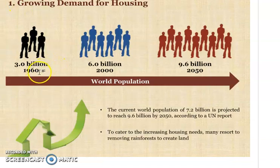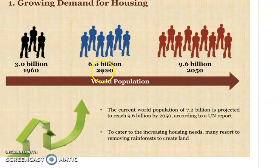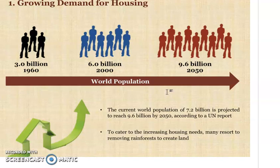This diagram shows the world population. In 1960, the world population was only 3 billion, which increased to 6 billion in 2000 and is expected to reach 9.6 billion in 2050. The current world population is almost 7.2 billion. According to a UN report it will reach 9.6 billion in 2050. This means the demand for houses has increased enormously, and many have resorted to removing rainforests to create land, increasing deforestation.